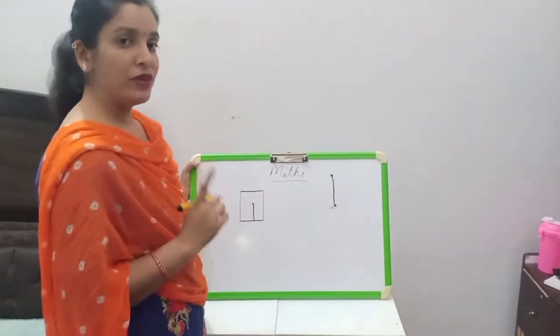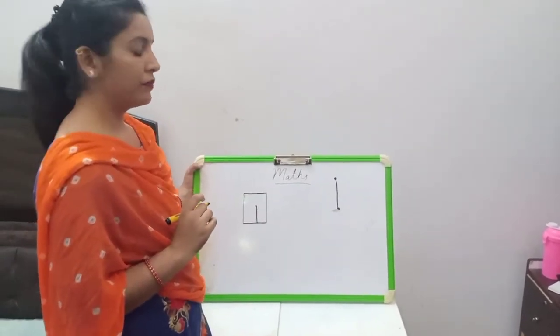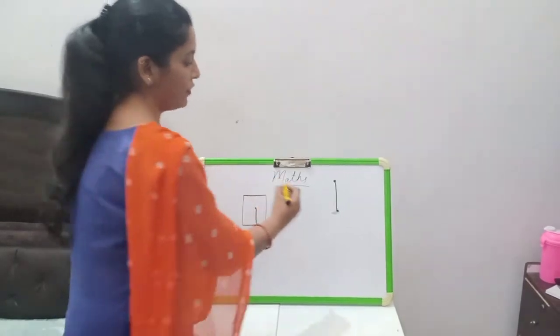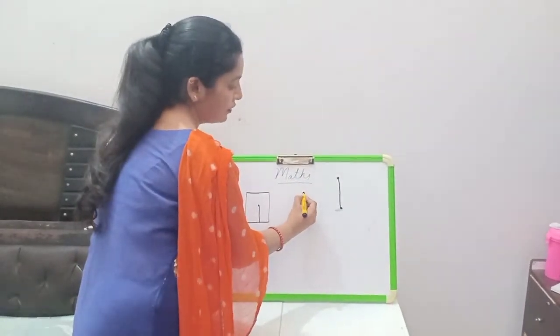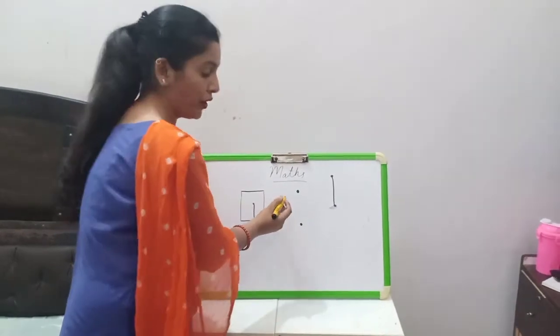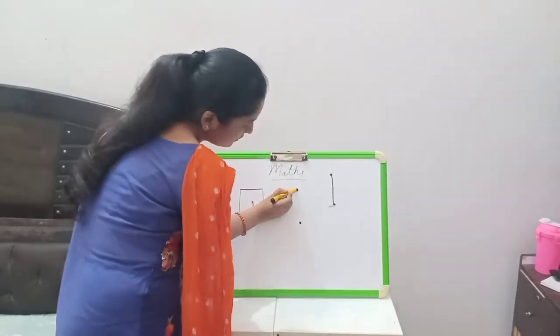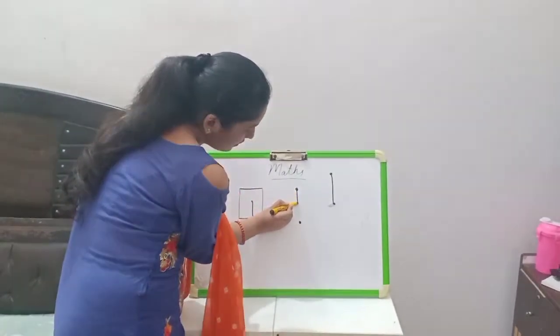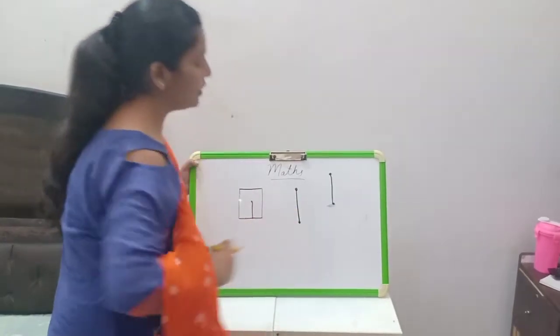Ek bar aap apni copies me likhe dekhyay. First, one dot. And then second dot. And we have to join the dots. Like this. Number one.